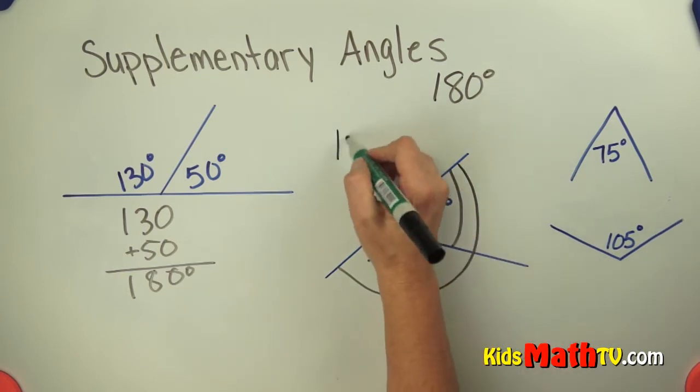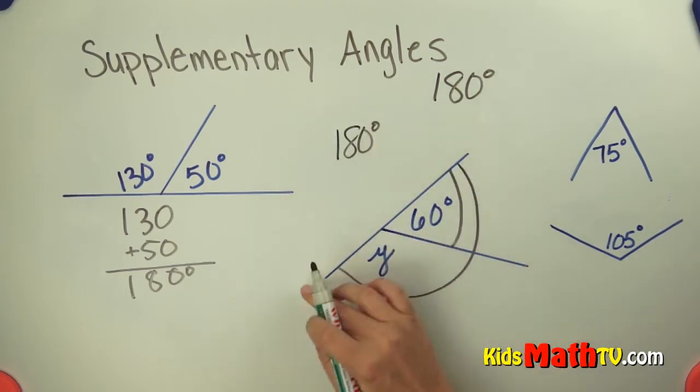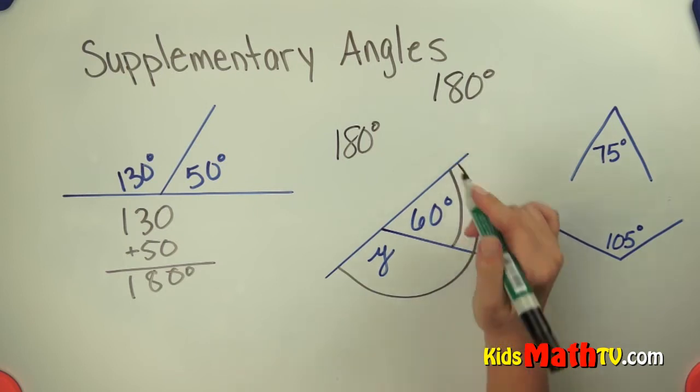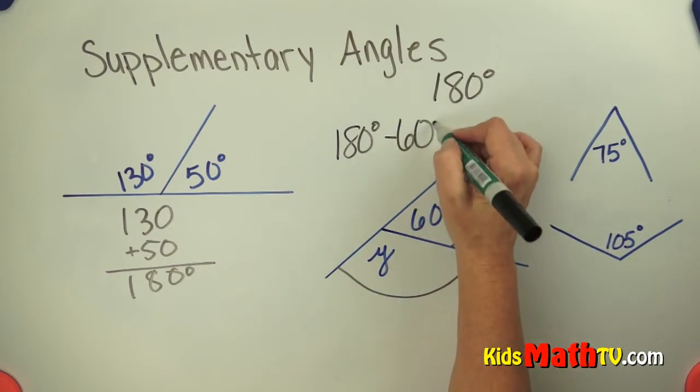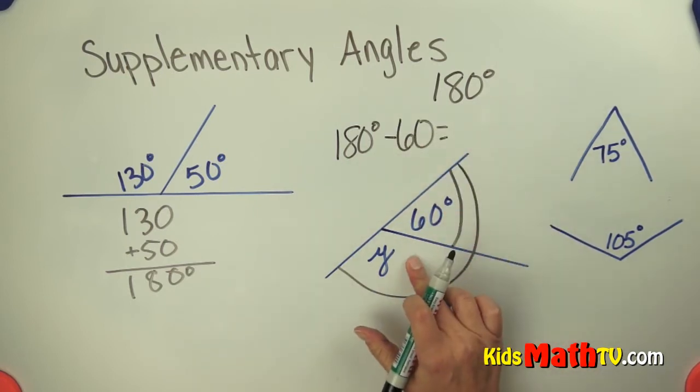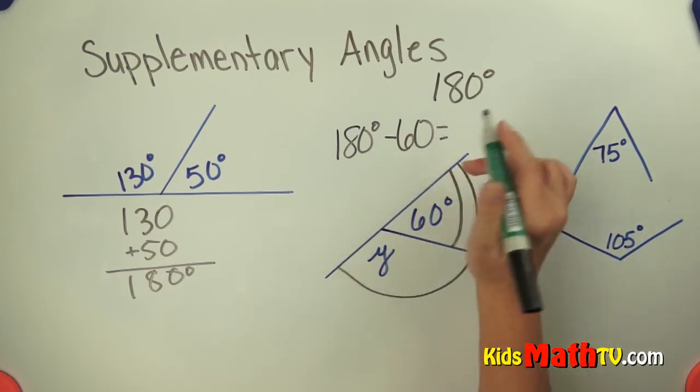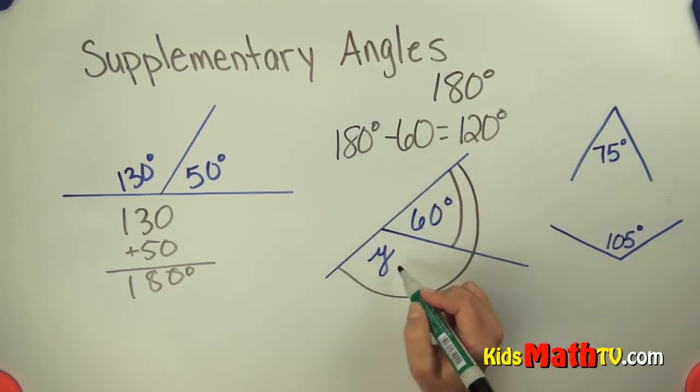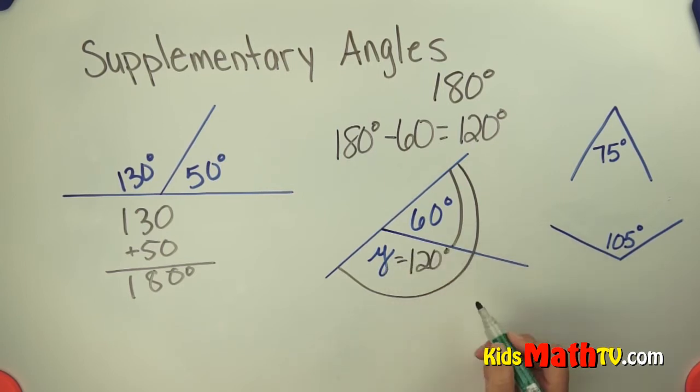And we can do that by taking the 180 degrees from our straight angle, subtracting 60 degrees from it to find what's left over. 180 minus 60 is 120 degrees. So the measure of angle Y is 120 degrees.